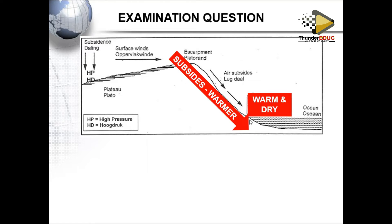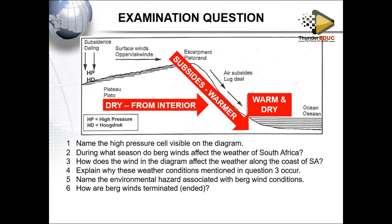We see warm, dry conditions as the winds descend. They are already dry from the interior because of cold, subsidizing conditions and no rainfall. Question: name the high pressure system visible on the diagram. The answer is the Kalahari high pressure system, sometimes called the continental high pressure system.